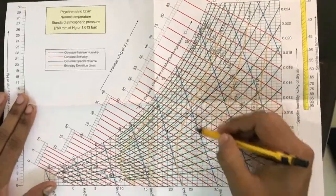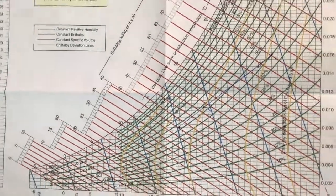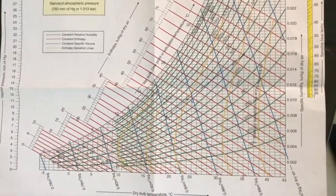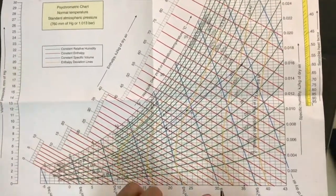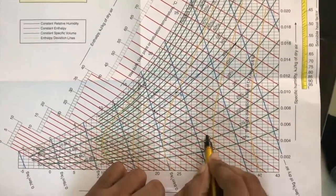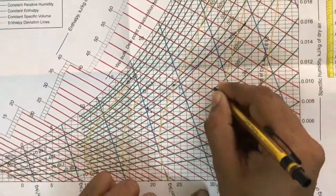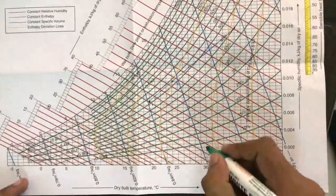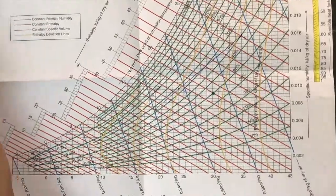Now the important part is, suppose if we are given that the dry bulb temperature is 30 degrees and the relative humidity is say 35%. So this is 30 degrees and here it is 35%, so this is our point that we need. This is 30 degrees, this is our point. Now we are able to find a number of parameters.